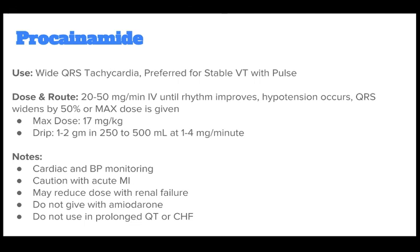Procainamide should be used for wide QRS tachycardia and is preferred for stable VT with pulse. The correct dose is 20-50 mg per minute IV until the rhythm improves, hypotension occurs, or QRS widens by 50%, or the max dose is reached. The max dose is 17 mg/kg. Drip: 1-2 gm in 250-500 mL at 1-4 mg per minute. Notes: cardiac and BP monitoring; caution with AMI; may reduce dose with renal failure; do not give with amiodarone; do not use in prolonged QT or CHF.